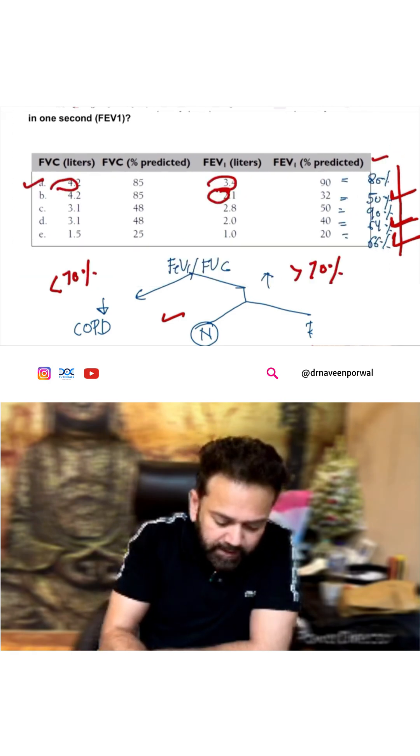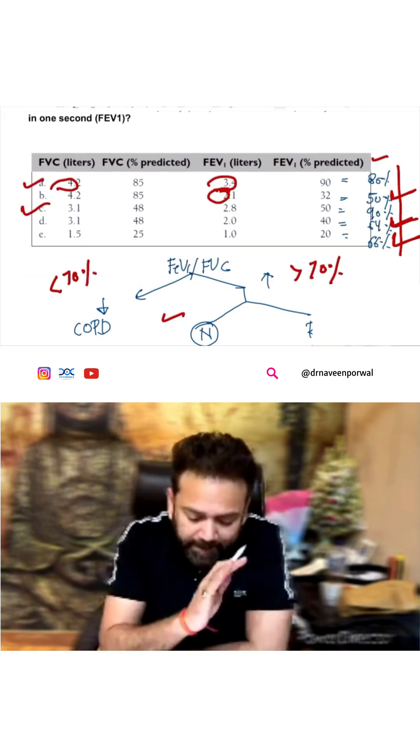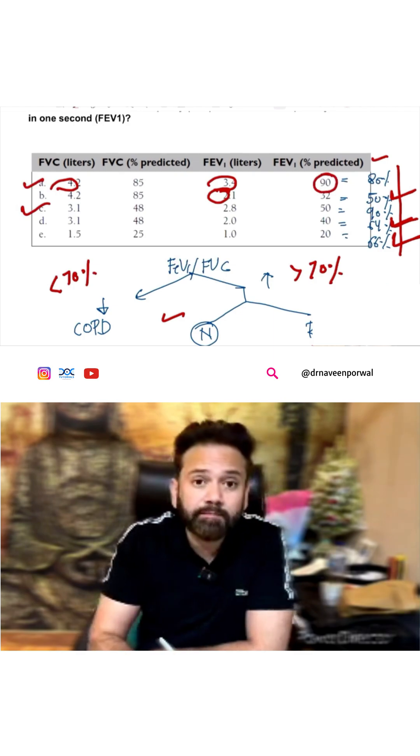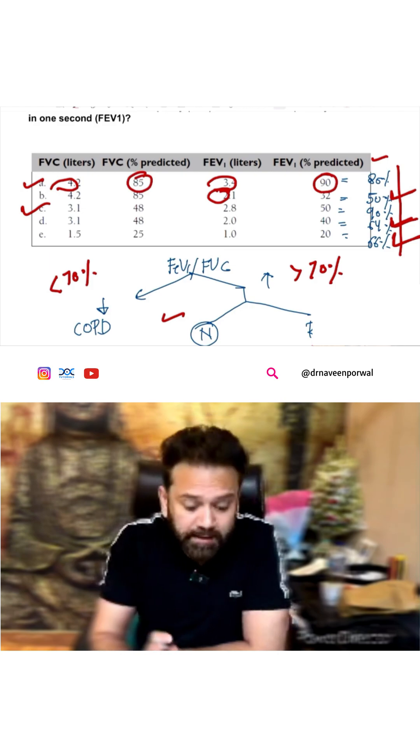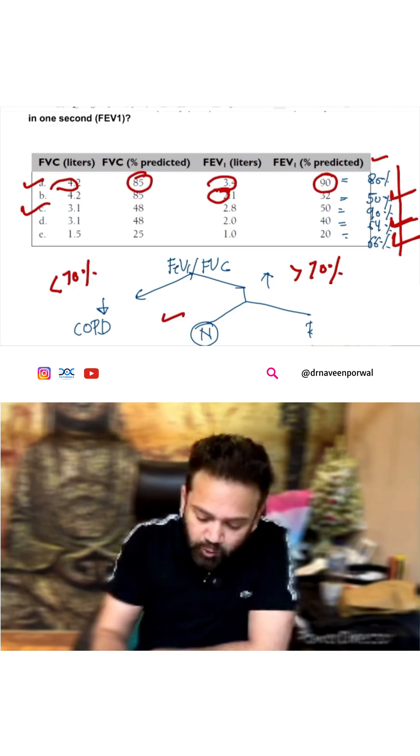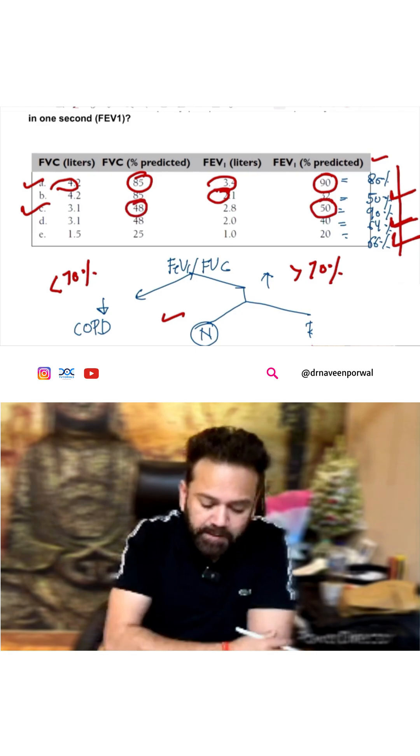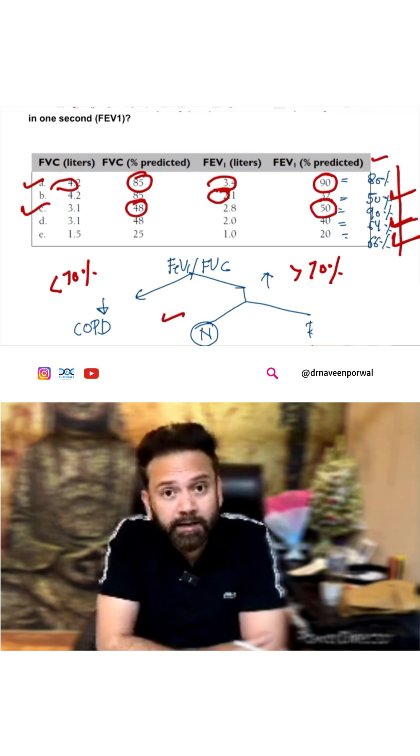Now in A, if you see, FEV1 is 90 percent of predicted, FVC is 85 percent of predicted - a good value. But in C, we can see FEV1 is only 50 percent of predicted, FVC is only 48 percent of predicted. So C can be RLD.